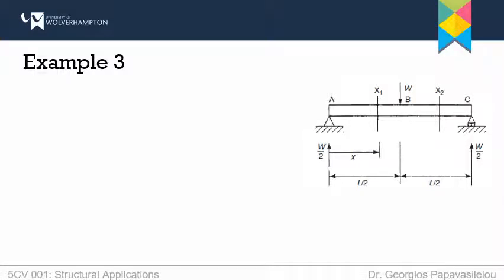In this example, I don't have any values. I only know that I have a point load in the mid-span of a simply supported beam. This is point A, point B, and point C, so practically the depth of the beam is virtually zero.